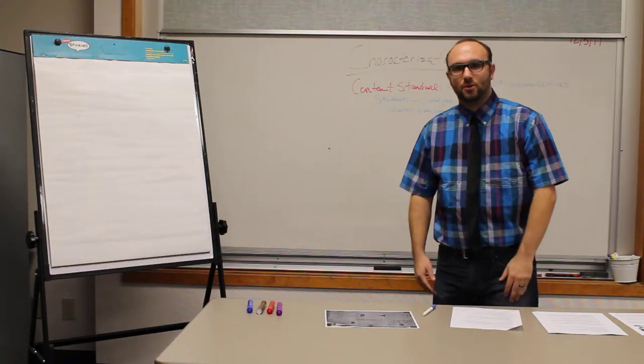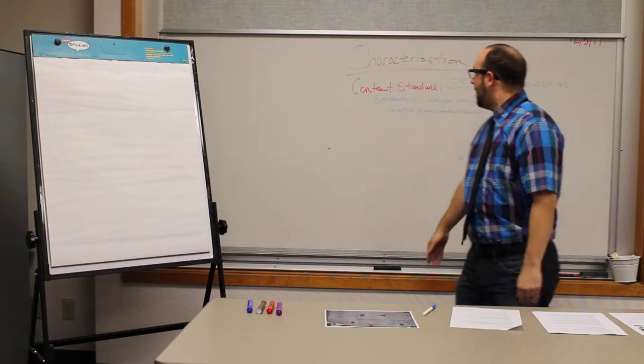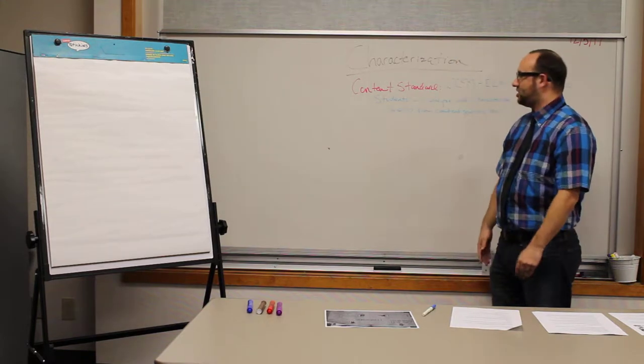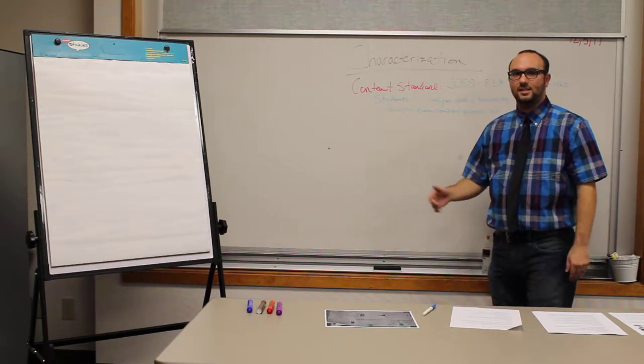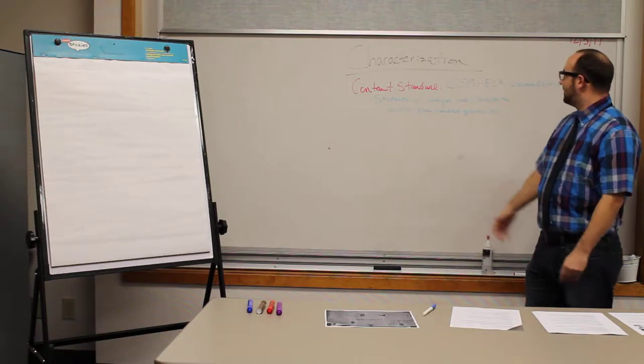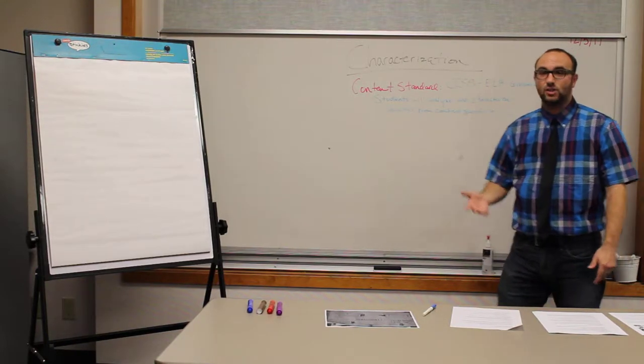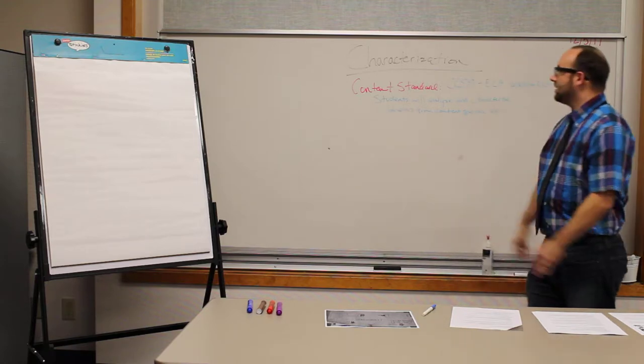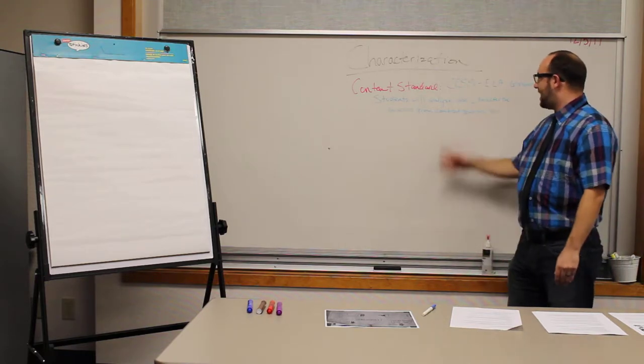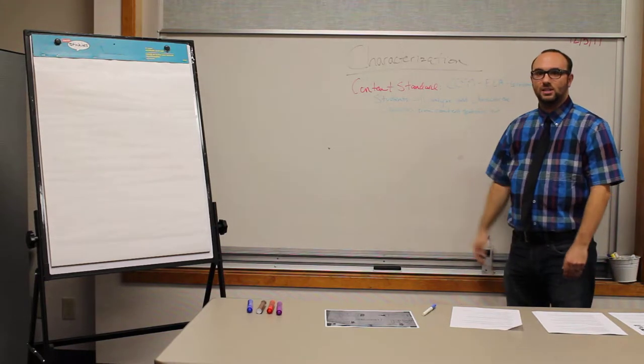Okay, so for today's lesson plan what we're going to be doing is an N2 activity. We're going to be focusing on characterization. The content standard that we're focusing on today is CCSS ELA Literacy RL 9-2 and it's going to be students will analyze and characterize characters from content specific text.